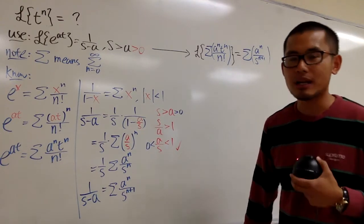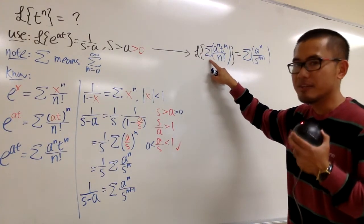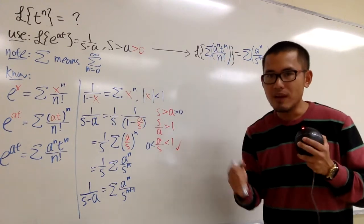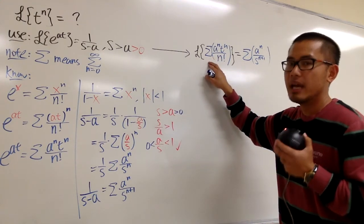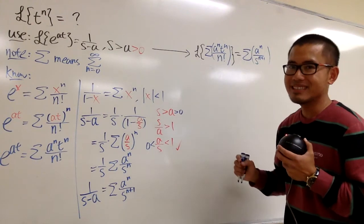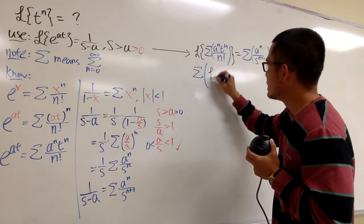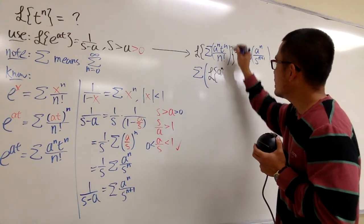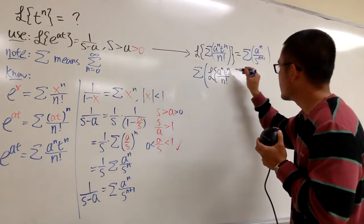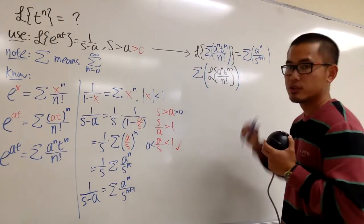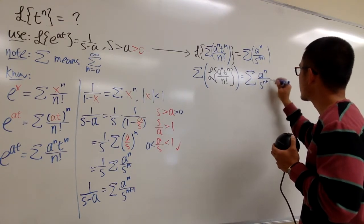Here is one small technical point: we are taking the Laplace of an infinite sum, but the fact is that the Laplace of a sum is the sum of the Laplace transforms — we can swap the order of Laplace and summation, even for infinite sums. So the left side becomes the summation with the Laplace transform inside: the Laplace of a to the n times t to the n over n factorial, and this still equals the summation of a to the n over s to the n plus 1.